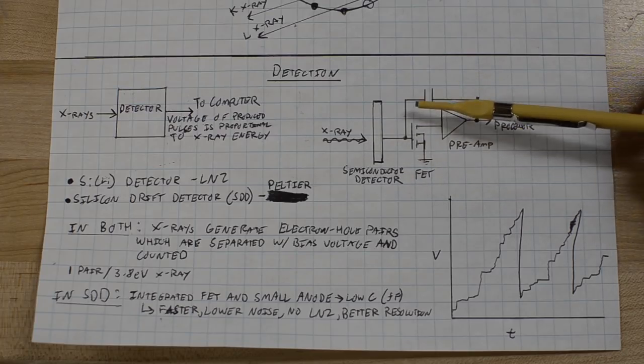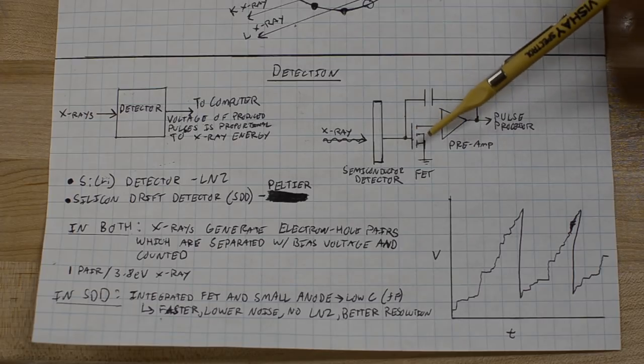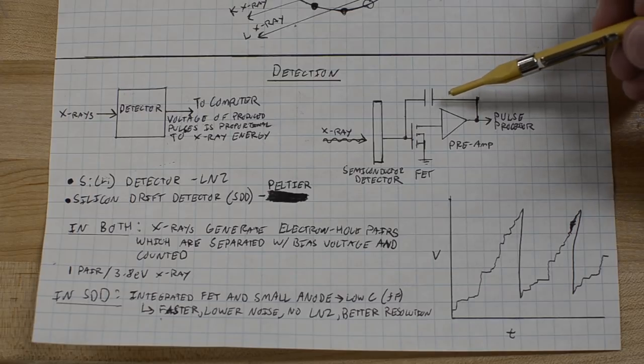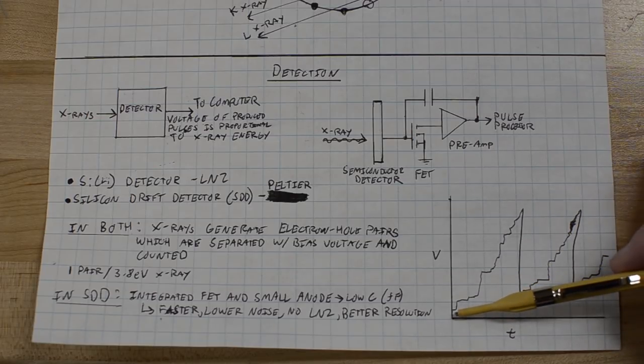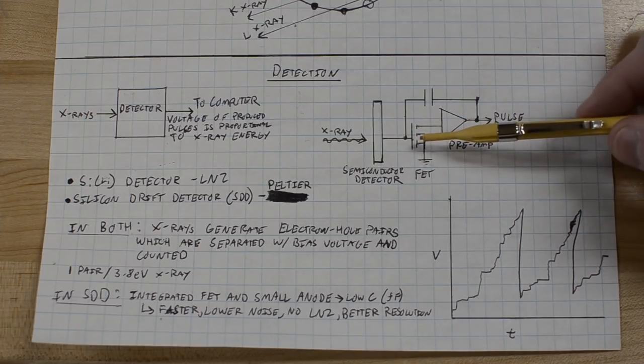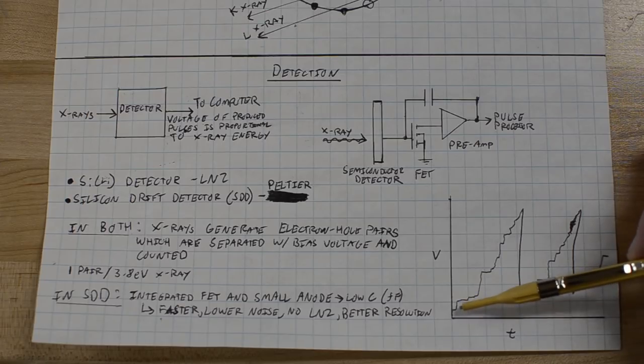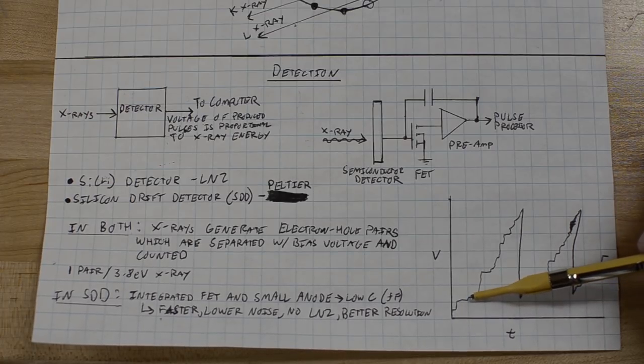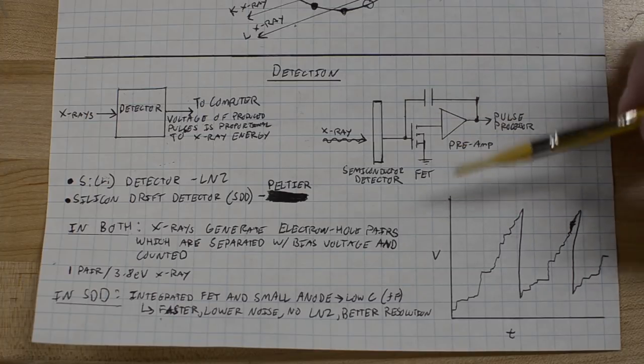There's a preamplifier and a feedback capacitor. For every x-ray event where the hole pairs are generated, swept off to the sides, and amplified, that potential is stored on this feedback capacitor. And after the capacitor fills up, it's basically shorted out, and you'll see in this graph here these rapid downward spikes. As an x-ray of some energy hits the detector, the voltage proportional to that energy created by the detector is stored on the capacitor. That causes these upward spikes in this graph here.